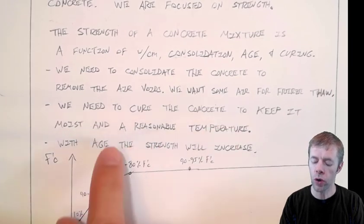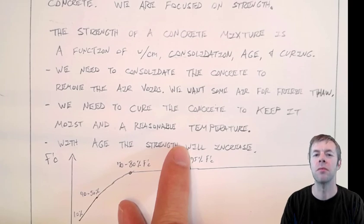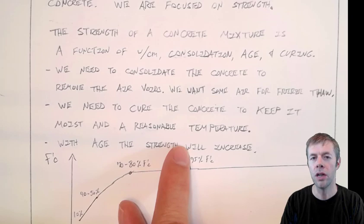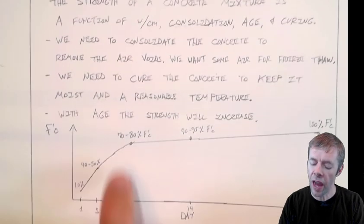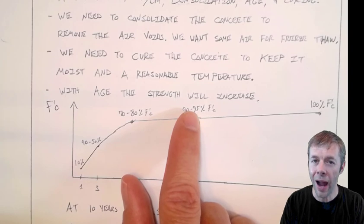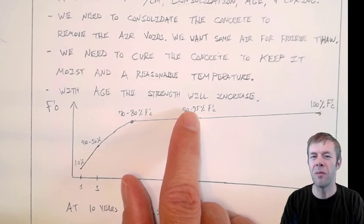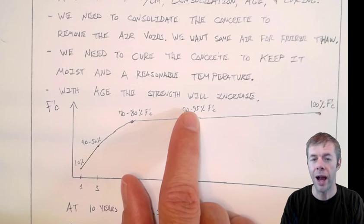Curing is where we keep the concrete moist and at a reasonable temperature. Why do we do that? Because we want to promote the reaction — we want to promote the hydration to continue so it can produce a tighter and tighter microstructure. With age, the strength is also going to increase as long as there is moisture present. As long as the internal relative humidity is above about 75%, the reaction will continue to happen.